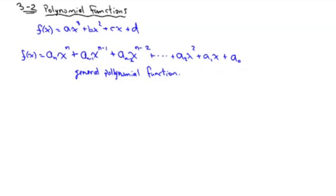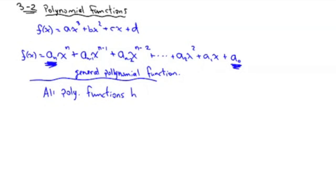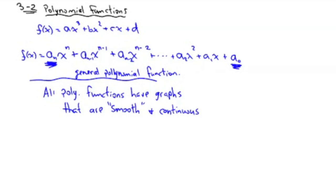Technically, knowing the full general polynomial is useful for proofs — like showing that if you add two polynomials together you get a polynomial. For this chapter, the only things you're concerned about are the first term and the last: A sub N and A sub 0. All polynomial functions have graphs that are smooth and continuous. I can't precisely define continuous for you without calculus, so you're just going to have to go with a little gut feeling on both of these ideas.